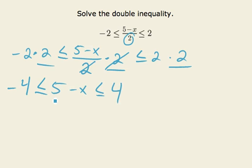Now I can go ahead and subtract five from all three sides. Negative five, subtract five, subtract five. Negative four minus five is negative nine, less than five minus five is zero, so I get negative x, less than or equal to four minus five is negative one.